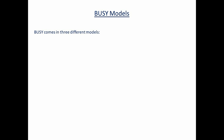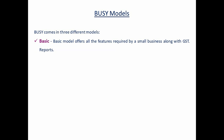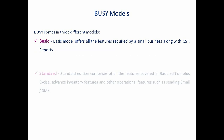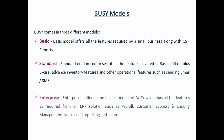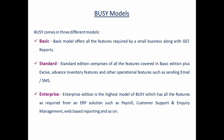Busy comes in three different models. First is Basic, which offers all features required for a small business along with GST. Then is Standard Edition, which comprises all features of Basic plus advanced inventory features and other operational features like SMS and email. Enterprise Edition is the highest model of Busy and has all features required from an ERP solution, like payroll, customer support and inquiry management, web-based reporting, and head office and branch office features.